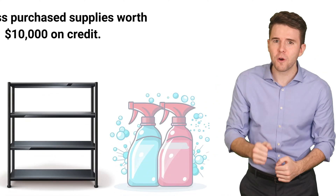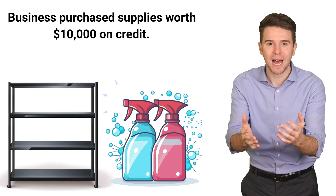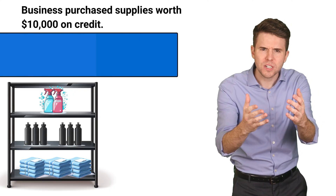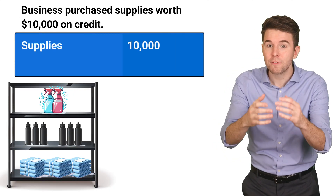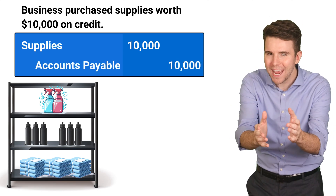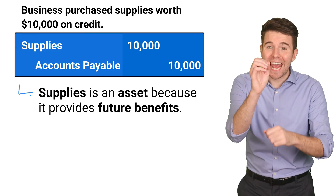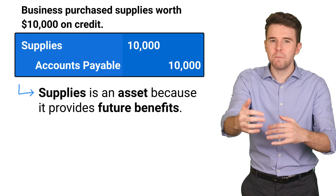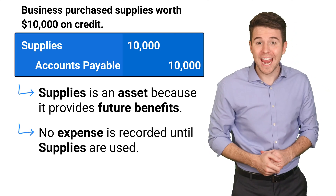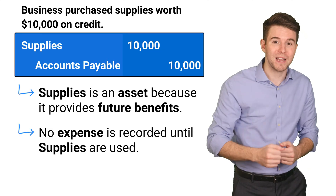Let's look at another prepaid expense example, this time with supplies. The company started with no supplies and therefore purchased $10,000 of supplies on credit during December. To record the purchase, we debit supplies for $10,000 and credit accounts payable for $10,000. Supplies is an asset because of the future benefits of using the supplies, but we don't actually record any expense until we use the supplies.